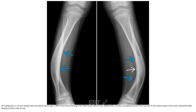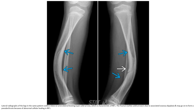In the same patient, confirmed bilateral antero-lateral bowing, which is characteristic of NF1. The fracture is due to associated osseous dysplasia and may go on to form pseudoarthrosis because of abnormal cellular healing in NF1.